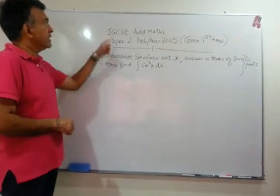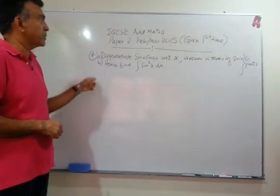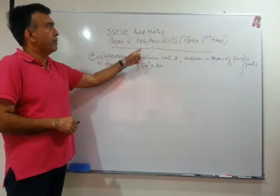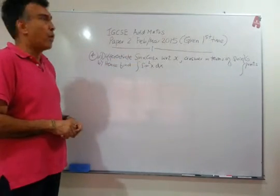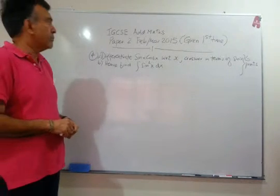It's question number 4. Again, this is IGCSE Maths, paper 2, February-March 2015. We are looking at question number 4. Two parts to the problem.